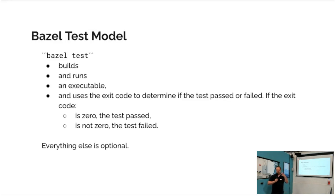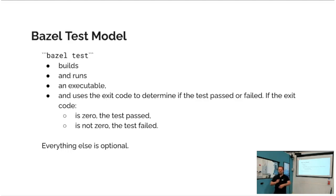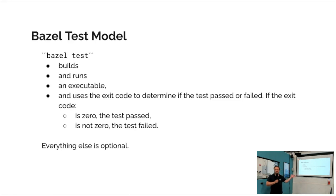When we talk about Bazel test, what does it mean? Bazel is a build system — what does it do with tests? From Bazel's perspective, a test is an executable binary that it runs. It looks at the exit code: if the exit code is zero, the test passed; if it's not zero, the test fails. That is the basic model, and it means you can do whatever you want in your test — it's just an arbitrary executable. You can bring up infrastructure or whatever you want. The optional features are the majority of the talk, but they're all optional.